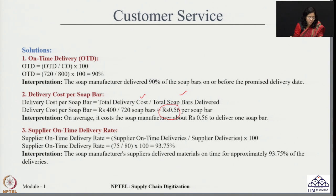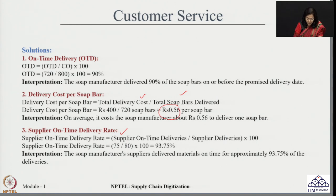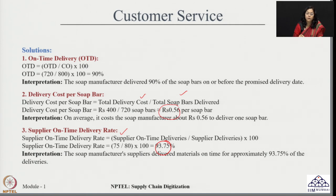The third KPI is supplier on-time delivery rate, which ensures how critically the suppliers responsible for providing raw material on time to the manufacturer are fulfilling their requirements. It calculates the supplier's performance as supplier on-time deliveries divided by the number of deliveries made by the supplier. In this case it is coming around 93.75 percent, indicating that the soap manufacturer's suppliers delivered raw material on time approximately 93.75 percent of the time — showing good supplier performance.